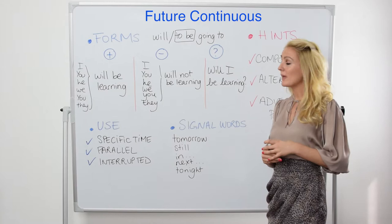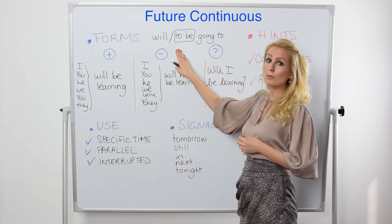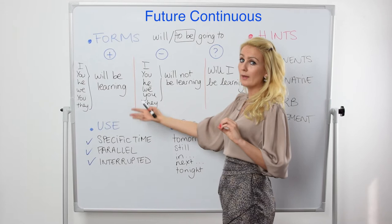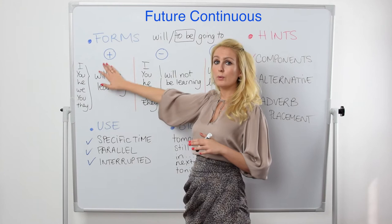Hello! Let's look at the Future Continuous together. It's also called the Future Progressive. It has two forms which are alternatives — they are interchangeable. You can either say 'I will be learning' or 'I'm going to be learning.' They mean the same.